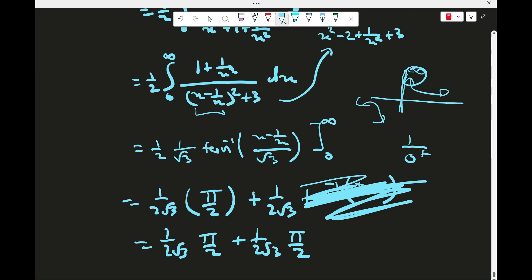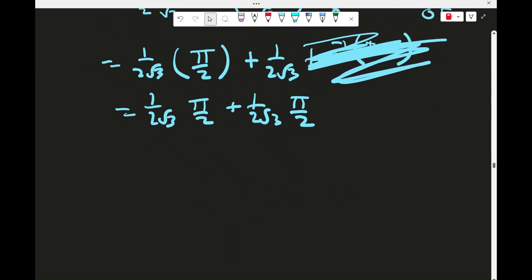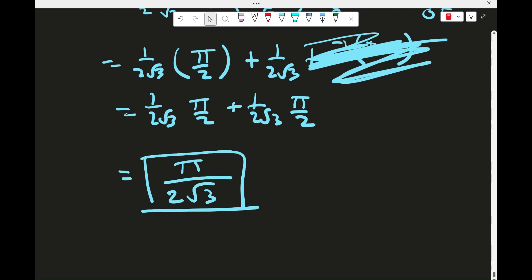So we just have this. And now we can... Bro. Okay, this is bugging out. I think my screen's not moving. Okay, it's working, it's working. This is a chaotic video, but we'll roll with it. So this is just going to be 2 times this. So the answer is pi over 2 root 3. And that is a nice answer to this integral.